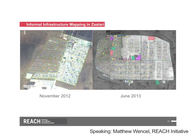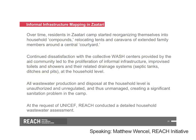Moving on to the final context: Zaatari Refugee Camp. In late 2012, Syrian refugees first started arriving in the camp. Less than a year later, the population served over 120,000 individuals, making it the third or fourth largest city in Jordan. Dynamics quickly became apparent that necessitated an approach tailored to an urban context, and today there are numerous similarities with urban and formal settlements elsewhere. Over time, residents in the camp started reorganizing themselves unofficially into household compounds, relocating tents and caravans and family members around a central courtyard. Continued dissatisfaction with the collective wash centers, toilets, and shower facilities led to the proliferation of informal infrastructure — improvised toilets and showers and their related drainage systems, septic tanks, ditches and pits — all at the household level. None of this was authorized or regulated, creating a very significant sanitation problem in the camp. At the request of UNICEF, REACH conducted a detailed household wastewater assessment.